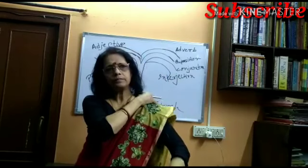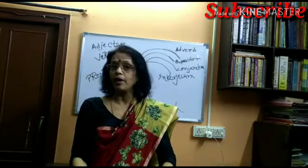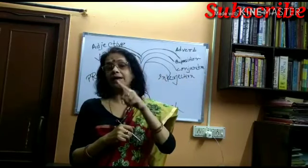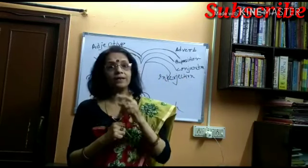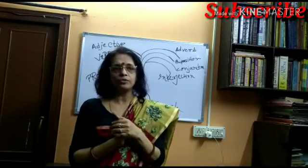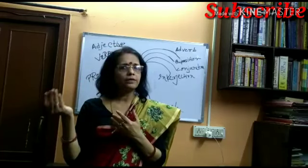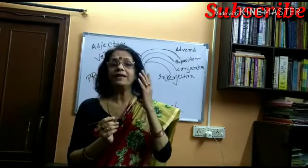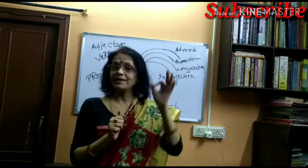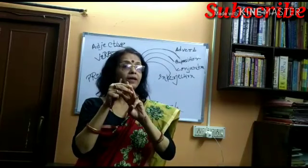If I were to say 'he is a very diligent boy' — diligent is an adjective describing the noun boy, but 'very' is telling you to what extent this boy is diligent, so very is modifying the adjective. If I were to say 'he talks very loudly' — loudly is an adverb, and very is describing or modifying another adverb 'loudly'. So three functions performed by the adverb: modifying a verb, modifying an adjective, and modifying another adverb.